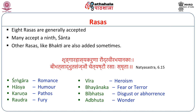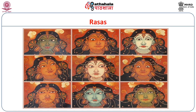The first Rasa is Shrungara — that is romance. Haasya is humor. Karuna is pathos. Raudra is fury. Veera is heroism. Bhayanaka is fear or terror. Bibhatsa is disgust or abhorrence. Adbhuta is wonder. Some of the English terms may change, but let us stick to the Sanskrit terms — Shrungara, Haasya, etc.